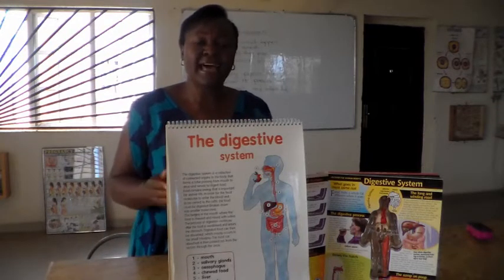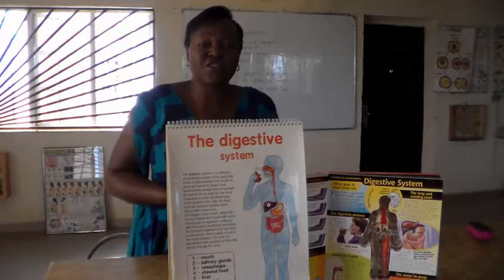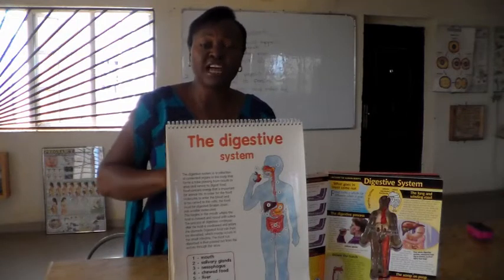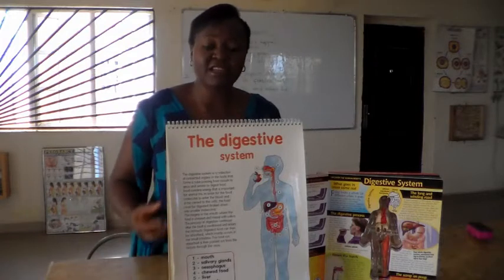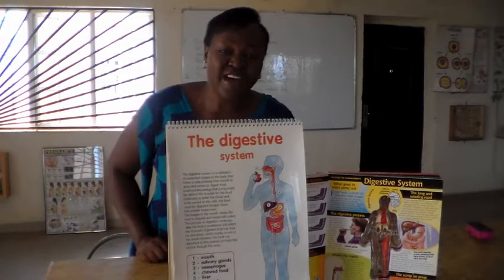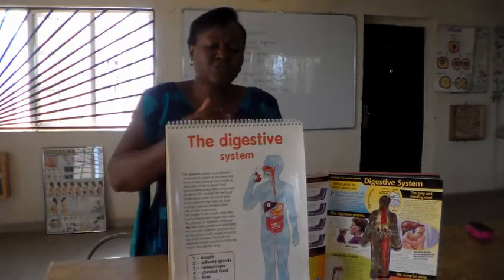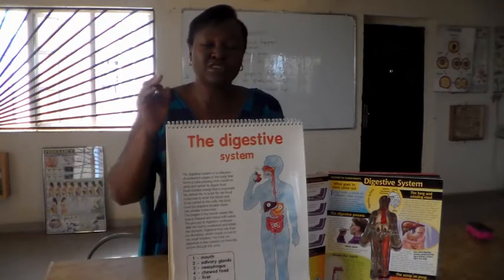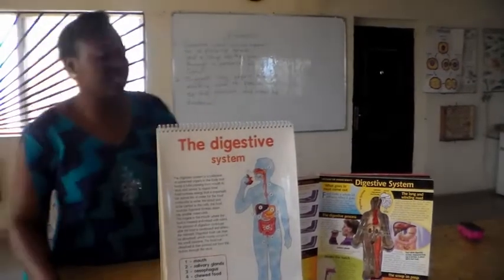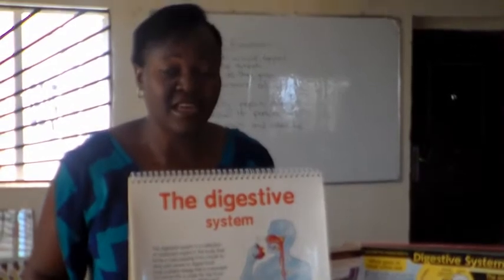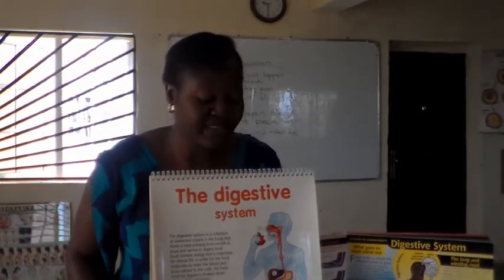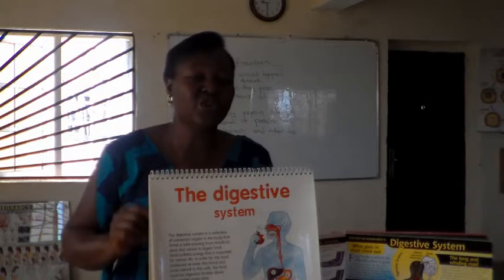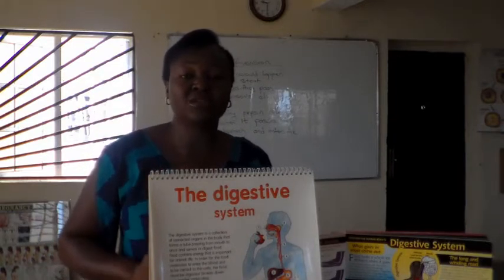The bile has three major functions. First, it neutralizes acid. Second, it adds water to chyme — chyme is the nature of food that comes from the stomach after digestion. Third, bile emulsifies fat: it breaks down fat into droplets so that the fat can be digested. Without pancreatic juice being secreted, the enzymes in the duodenum cannot function, as they require an alkaline medium.